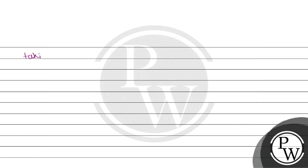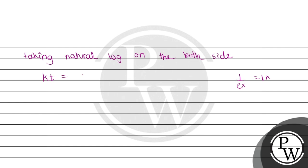Taking the natural log on both sides, we get kt equals the natural log of the initial concentration of the reactant divided by the concentration at time t. Therefore, k will be equal to 1 upon t times the natural log of initial concentration divided by concentration at time t.